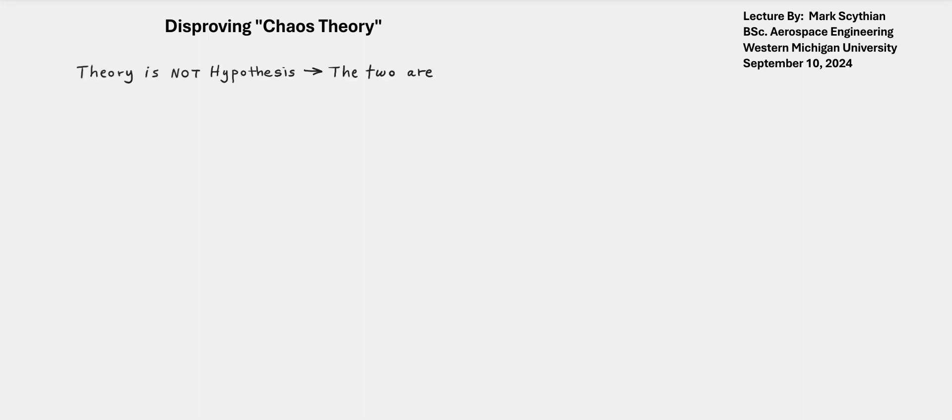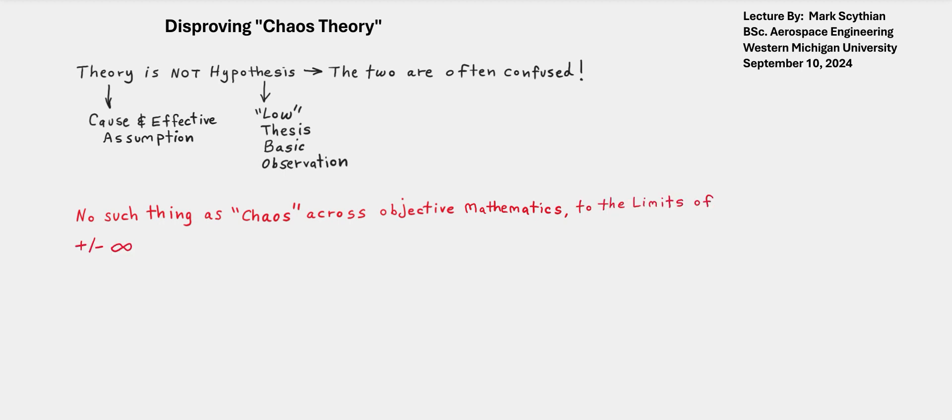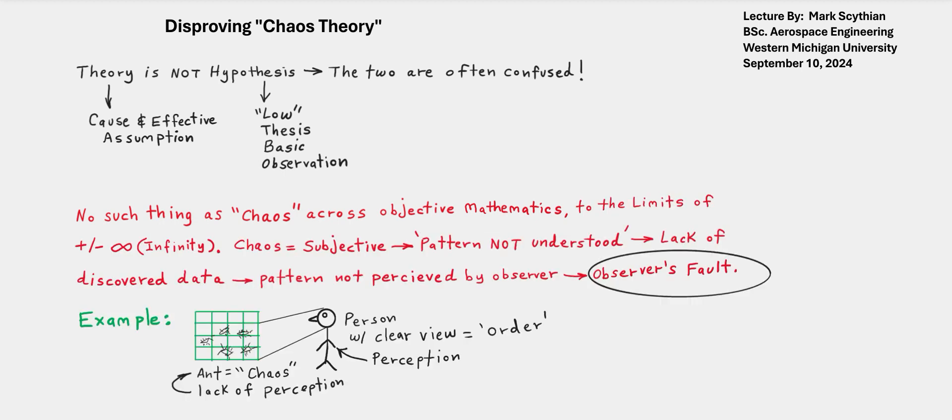Welcome to this lecture. My name is Mark Scythian. The date today is September 10, 2024. The title of this lecture is Disproving Chaos Theory.